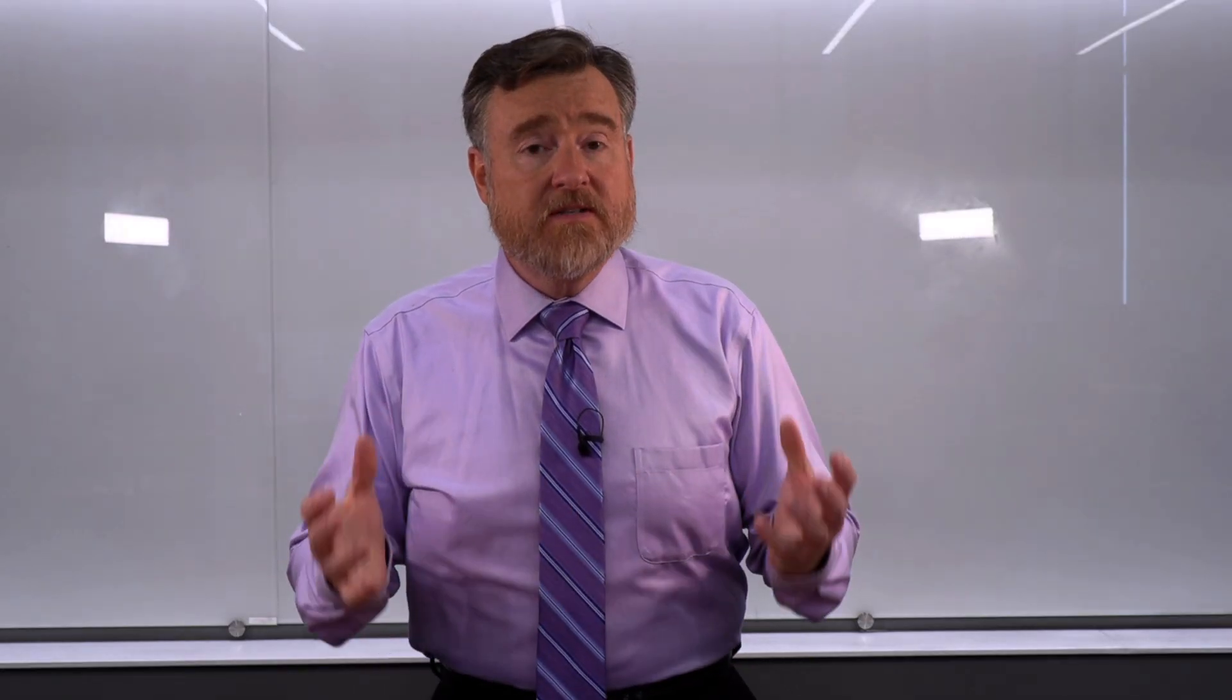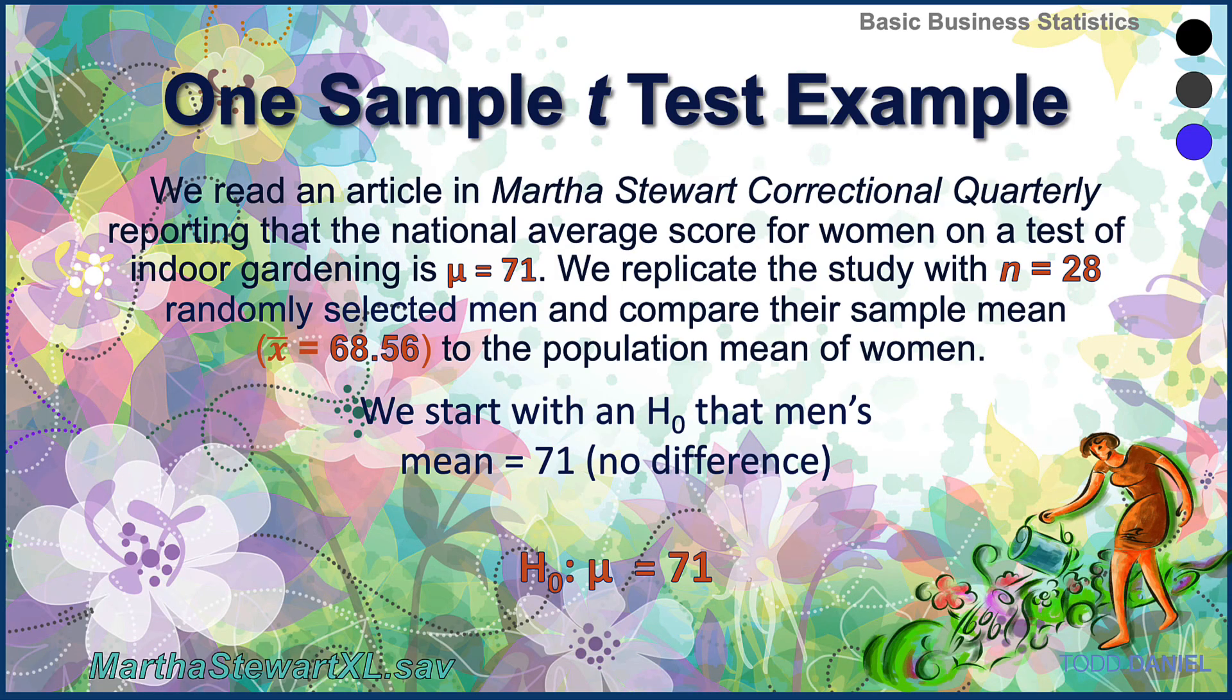And let me show you the data that we're going to be testing with our new t-test. We read an article in Martha Stewart Correctional Quarterly reporting that the national average score for women on a test of indoor gardening is 71. We replicate the study with 28 randomly selected men and compare their sample mean of 68.56 to the population mean for women.